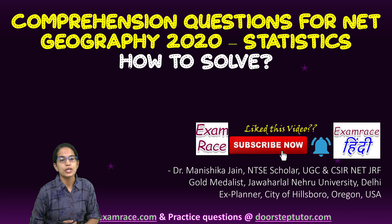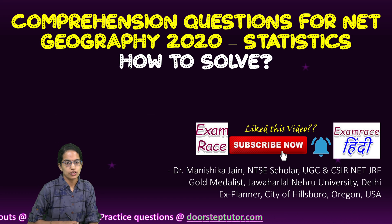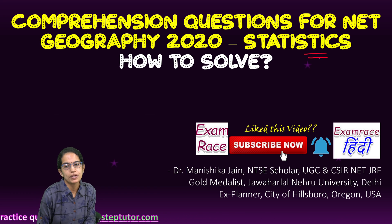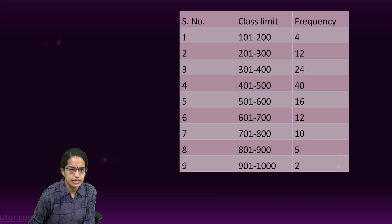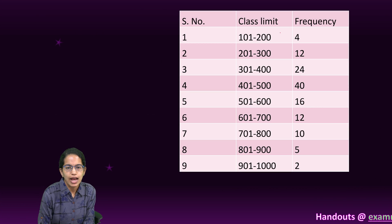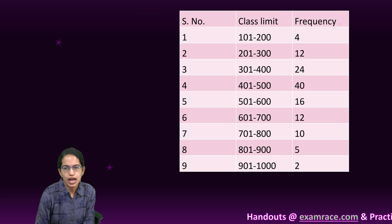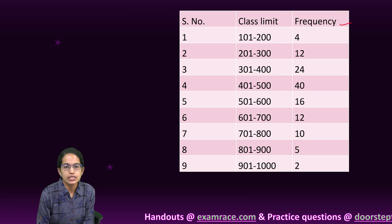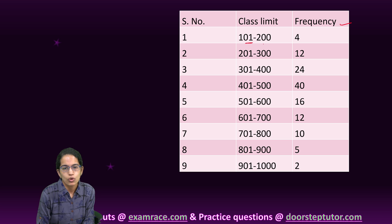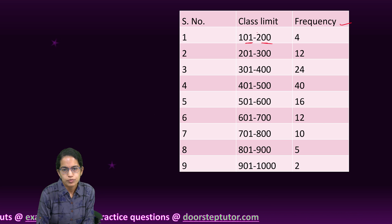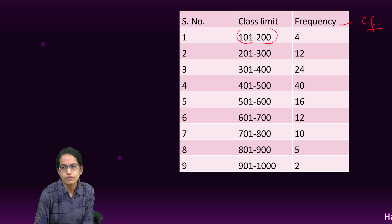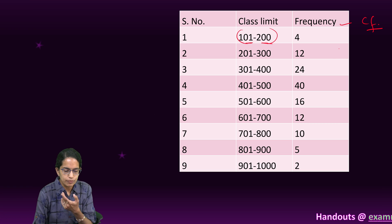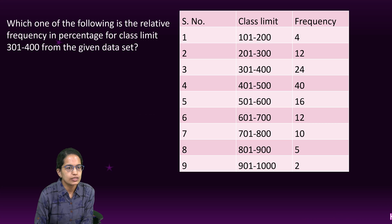Students usually face issues with comprehension questions in geography. This time the comprehension question pertained to statistics. What was given was a table with class limits and the frequency against each class limit. This is an inclusive series — 101 to 200, so both values are included within the class limit. We need to identify it as an inclusive series and then use the frequency to find the cumulative frequency.